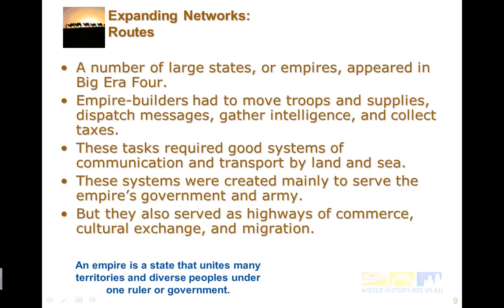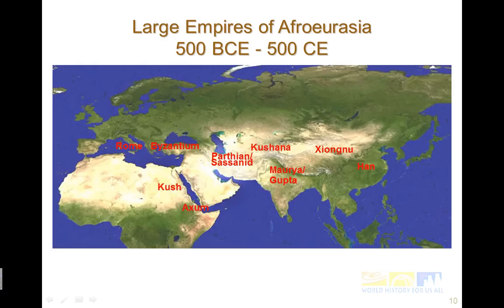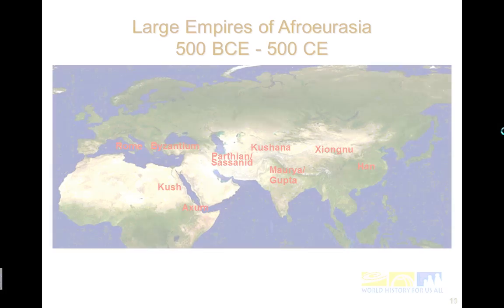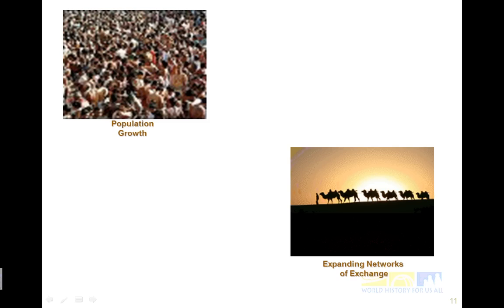But those systems also served as highways of commerce, cultural exchange, and migration. The empires built these to run their empire, but people were able to use them to trade, share ideas, and move. There are quite a few large empires throughout Africa, Eurasia, Europe, and Asia that we'll be looking at. To recap, in this next era we'll be focusing on population growth — its reasons and consequences — and also the expanding networks of exchange and how empires helped contribute to that.